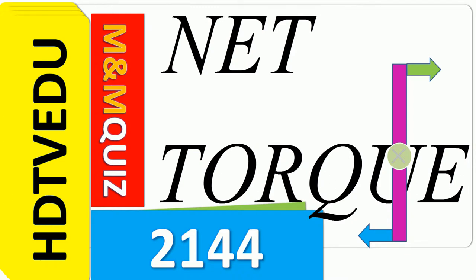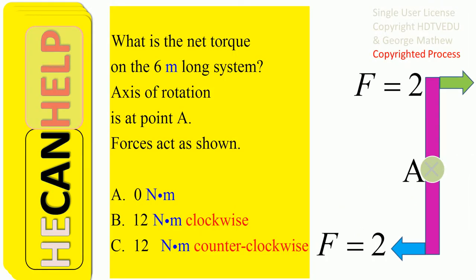Welcome to MM Quiz 2144. What is the net torque on the six-meter-long system? The axis of rotation is at point A, and forces act as shown. Is it A) 0 newton-meters, B) 12 newton-meters clockwise, or C) 12 newton-meters counterclockwise? This distance is three meters and this distance is three meters, for a total of six meters. This is the axis of rotation.